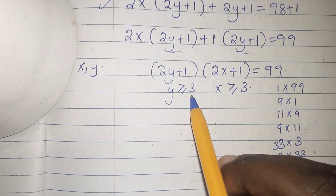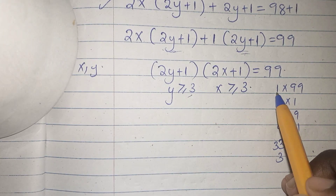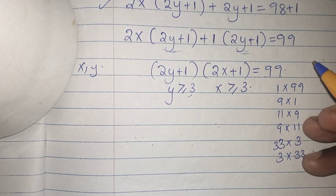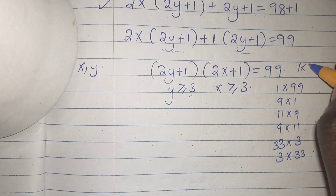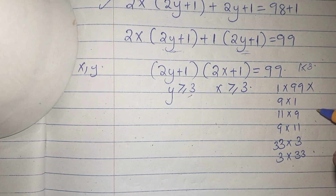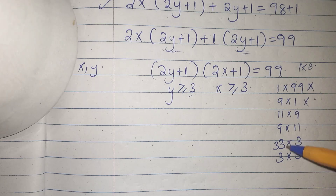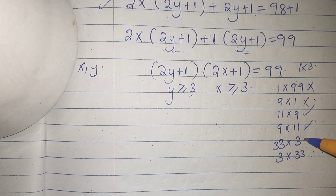Since y is greater than or equal to 3, the factor 1 is less than 3, so we reject the cases using 1. Since 11 is greater than 3 and 33 is greater than 3, we accept those cases.